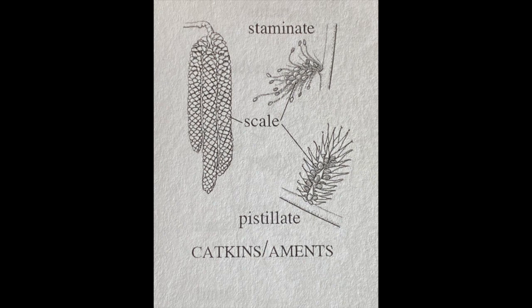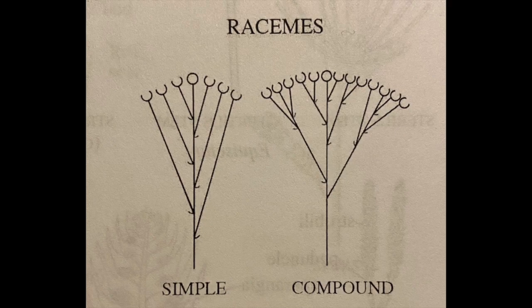For some plants, the presence or absence of catkins can be an identifying character when trying to determine the species. Catkins are slim, cylindrical flower clusters that are wind pollinated and tend to develop fully in the spring. A raceme refers to a type of structure that holds fruits in the summer but sometimes will still be seen hanging on to the plant during the winter.